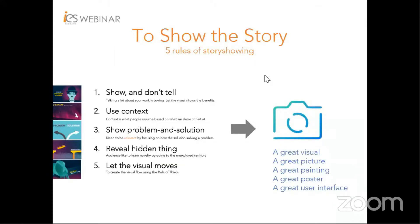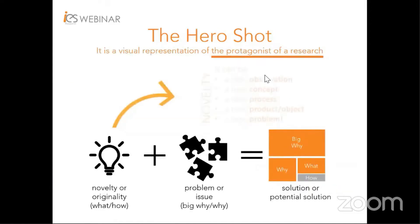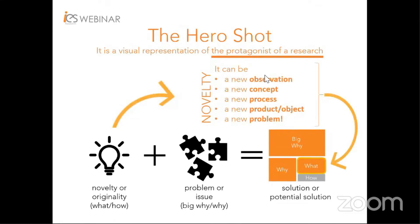Understanding the five rules of story showing, it is now possible to appreciate a great visual, picture, painting, poster, or even a great user interface. But there's one more thing you need to know: the hero shot. What is the hero shot? It is a visual representation of the protagonist. The main characters like the balloon, the lady, and Thor are all protagonists. It is very important to choose one protagonist — not many — for one visual. For a good start, stick to one protagonist for one hero shot.